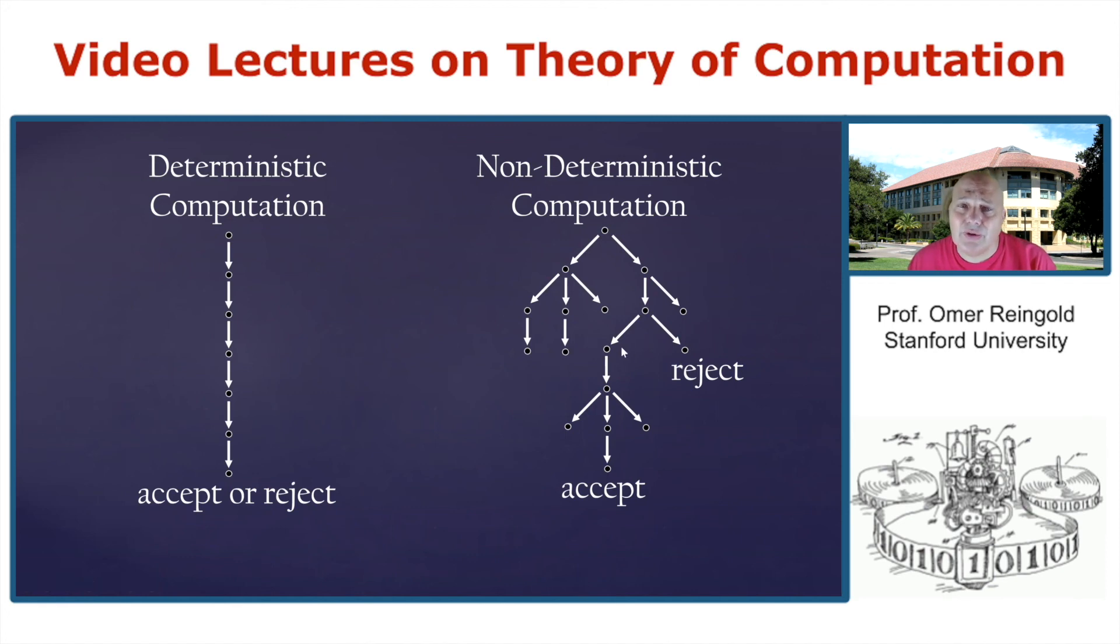So this looks much richer. And the question is, are these two computations the same or different? So are these computations equally powerful? And when you just look at this picture, it looks like non-deterministic computations are much more powerful. But as many of you know, in fact, these two models of computation can compute the same thing.